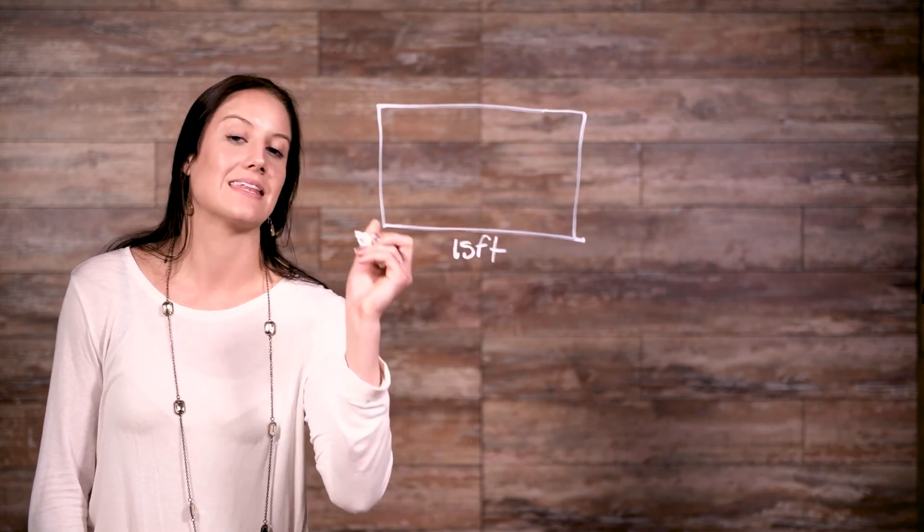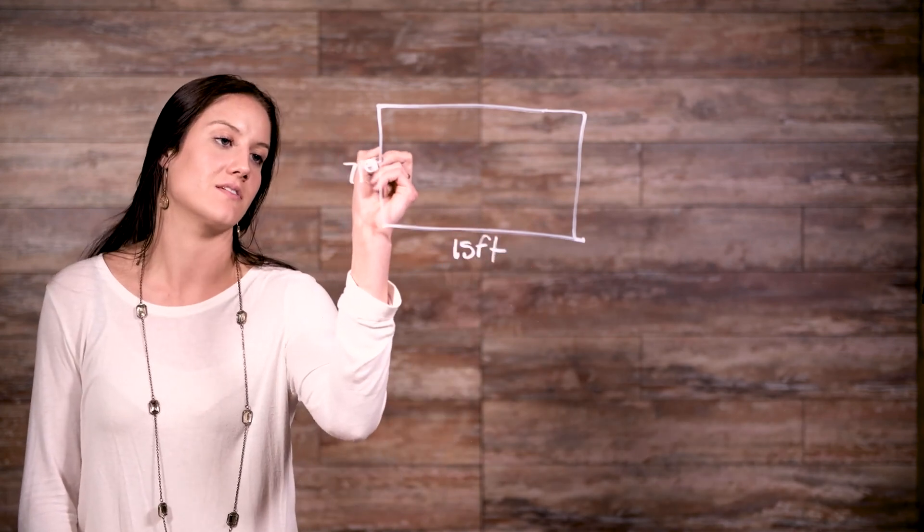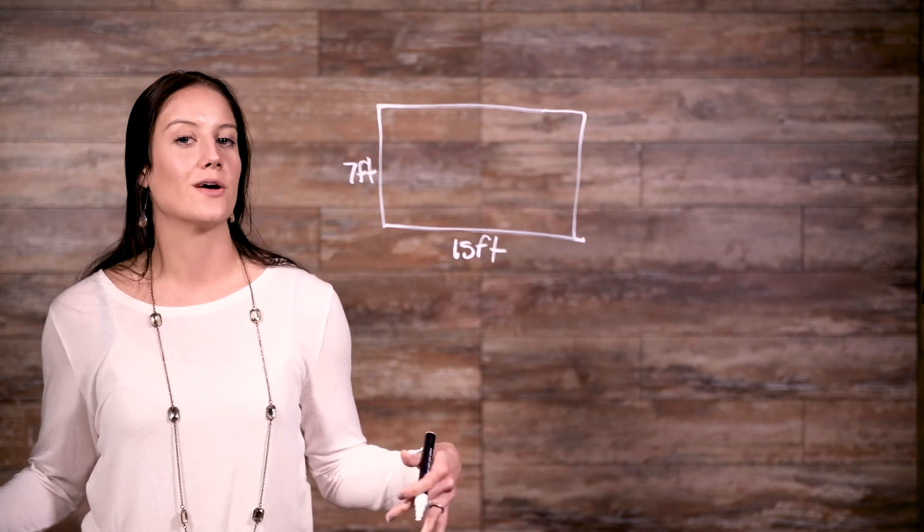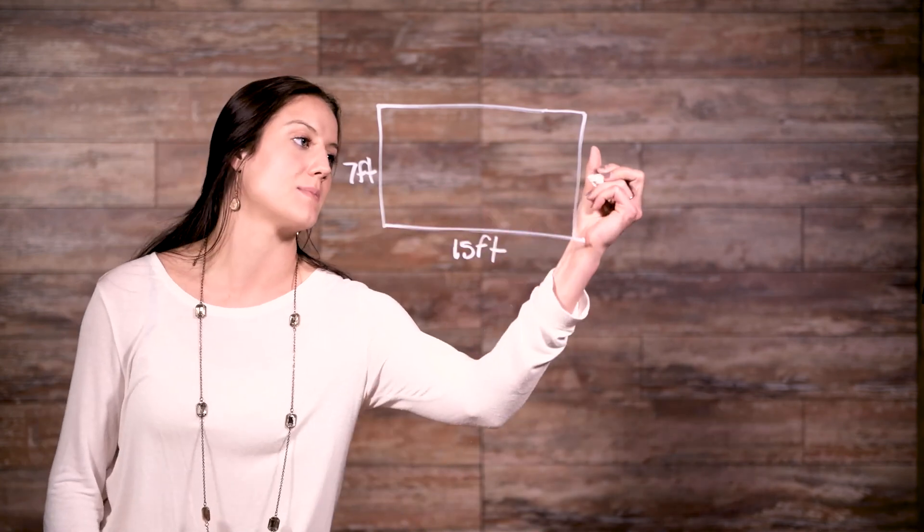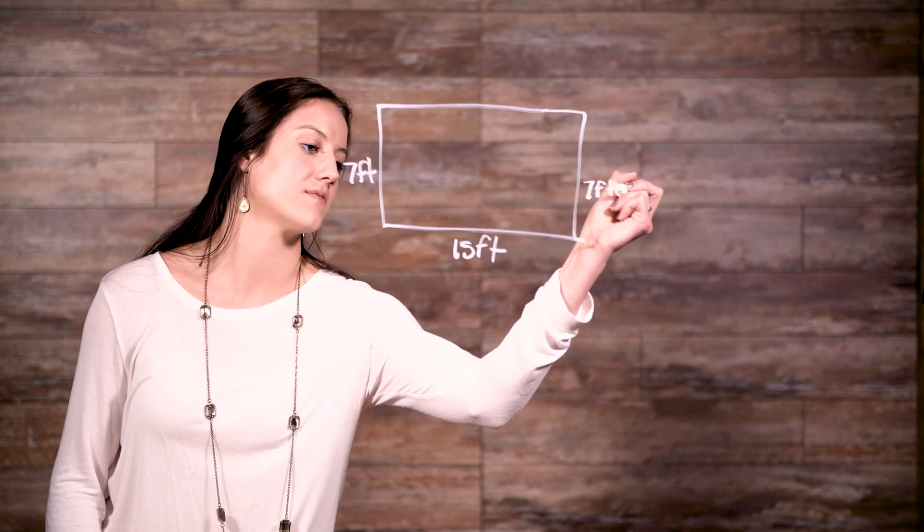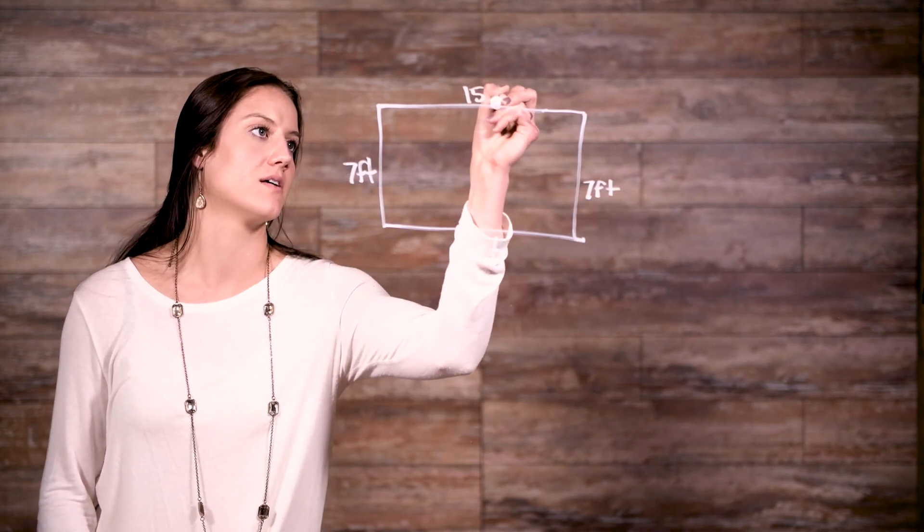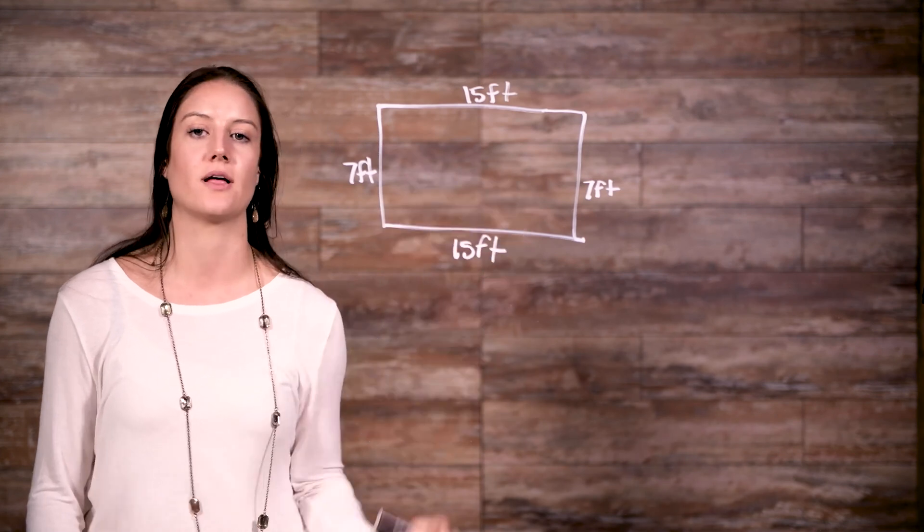Let's use our rectangular pool as an example. Let's say that the width is 15 feet and that the length is 7 feet. Since it's a rectangle, we know that our parallel sides have the exact same length, so that makes this side over here 7 feet and this side right here 15 feet.